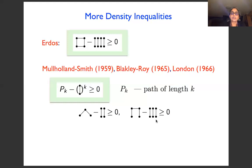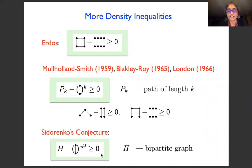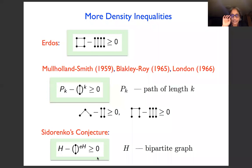The Blakely-Roy inequality for k = 2 says: density of a cherry (path of length 2) minus edge² ≥ 0; for k = 3 a path of length three has density ≥ edge³. These are proven cases. There is also Sidorenko's conjecture — not proven in general — which says that for any bipartite graph H, the density of H is at least edge to the power of |E(H)|. The Blakely-Roy paths are special cases of Sidorenko's conjecture, since paths are bipartite.